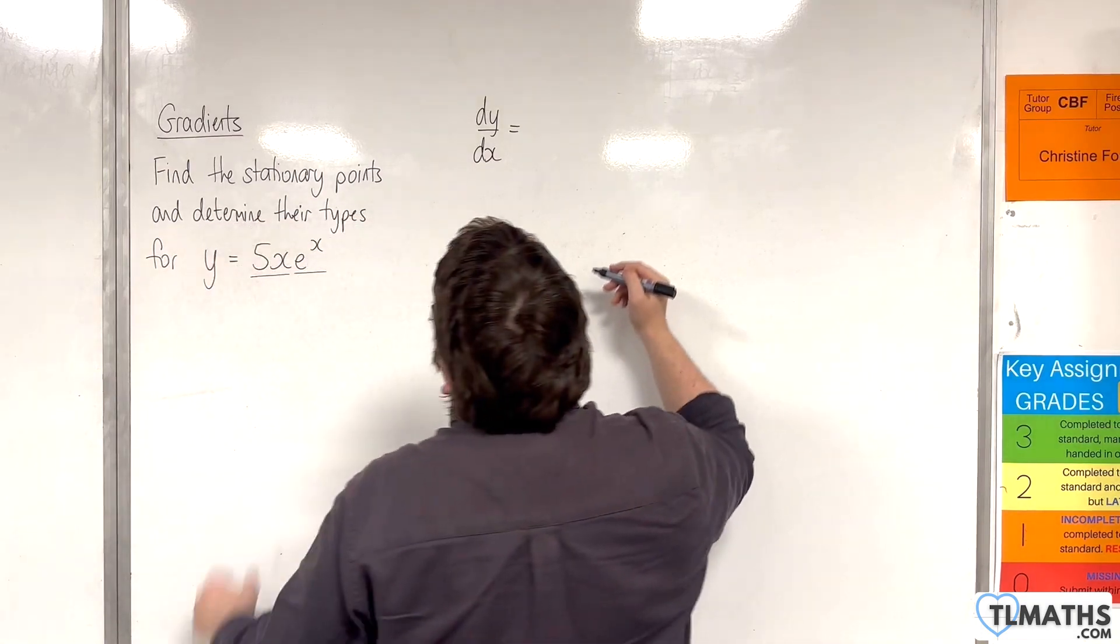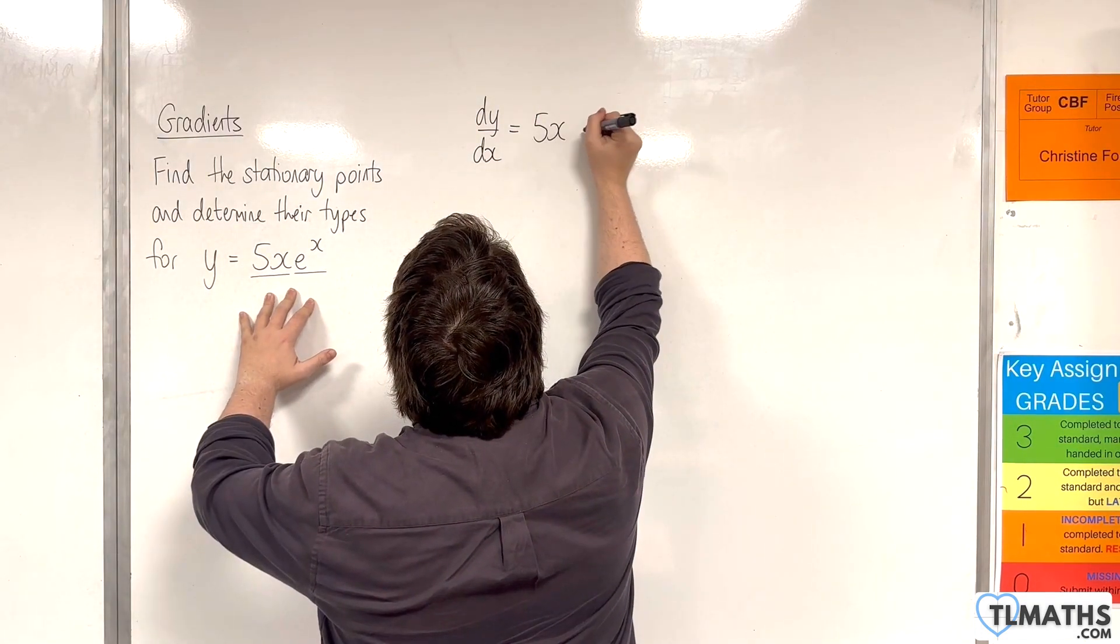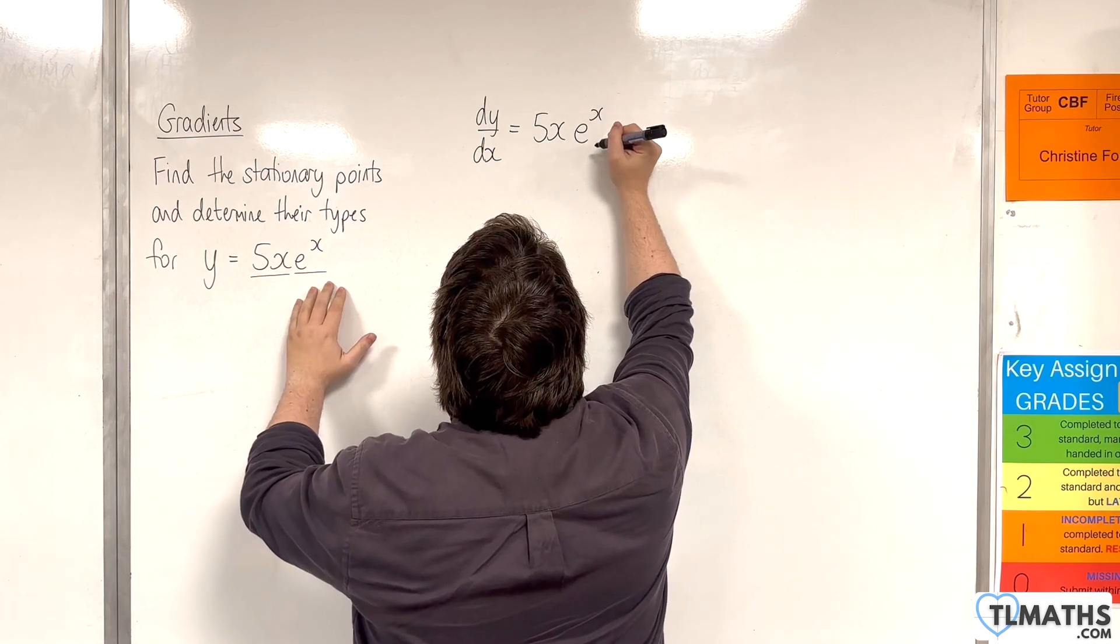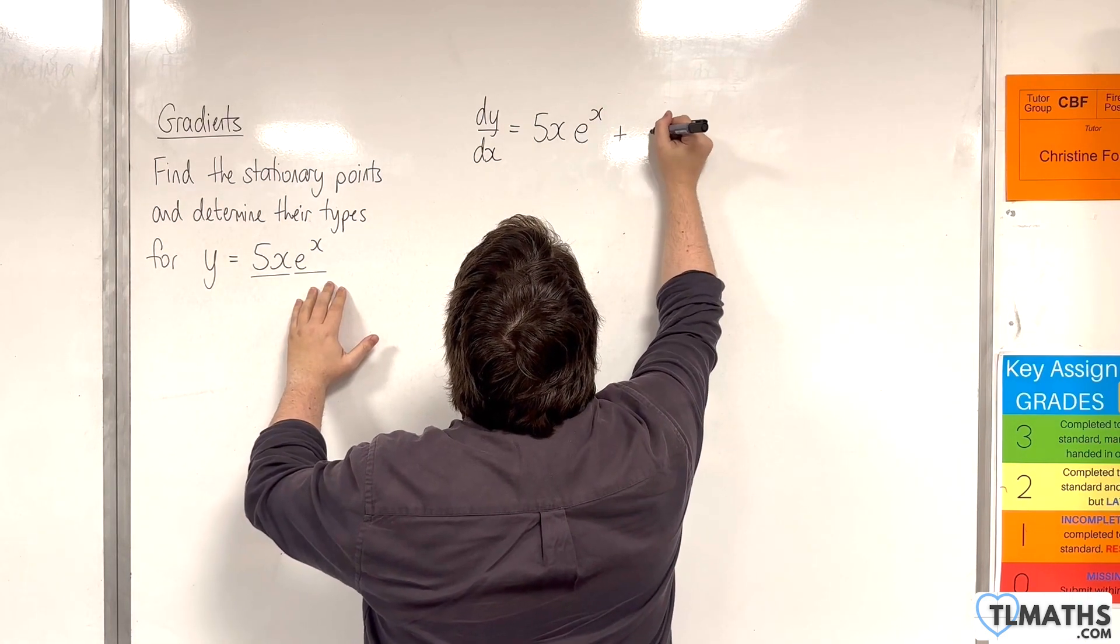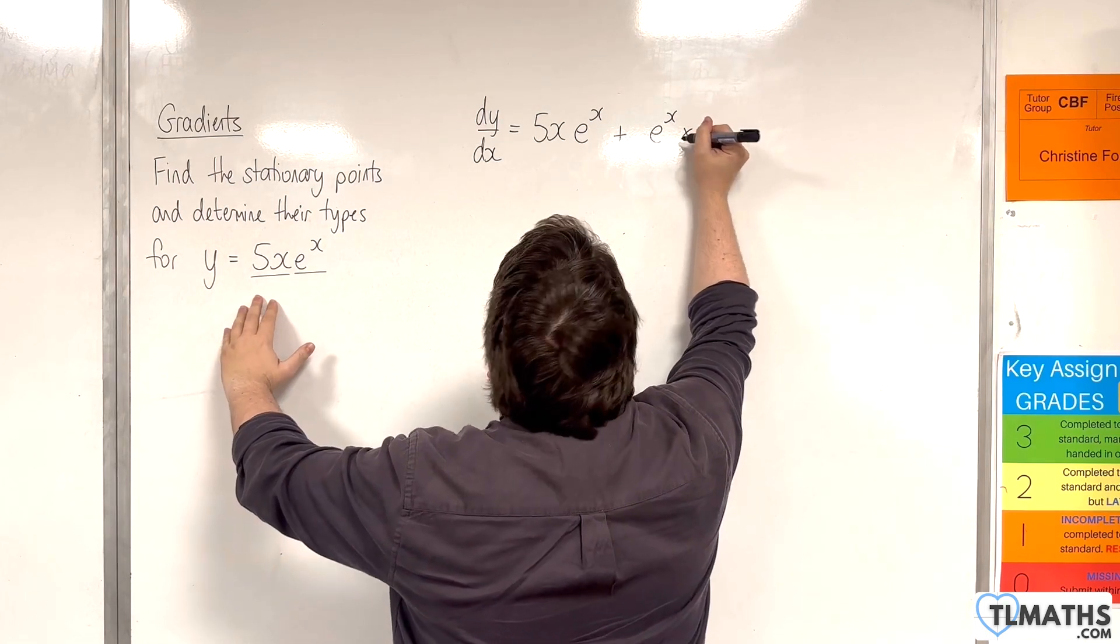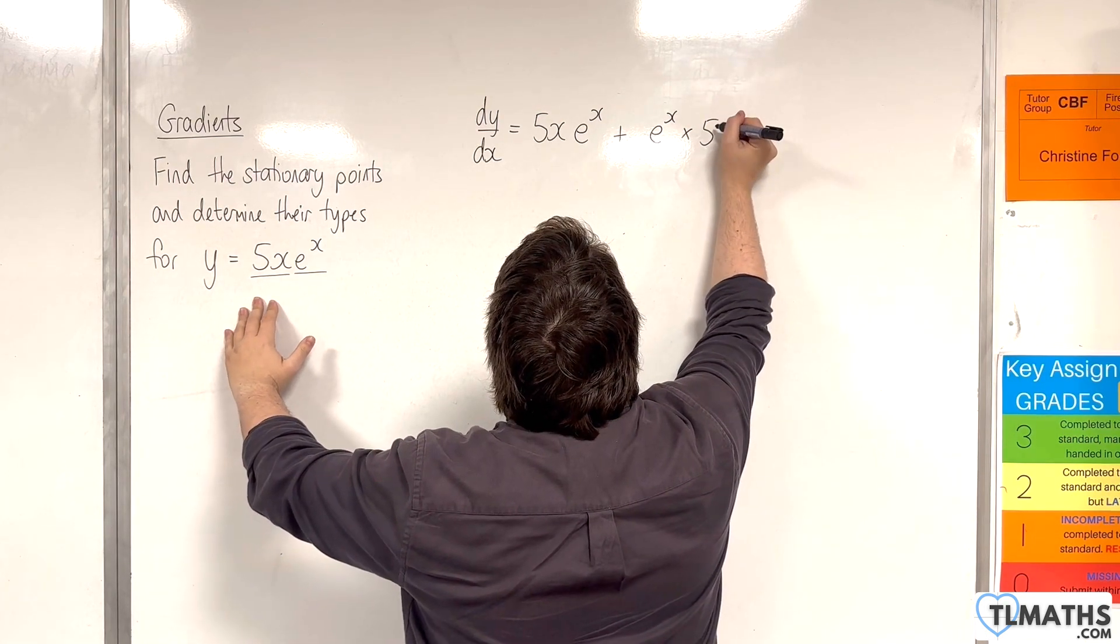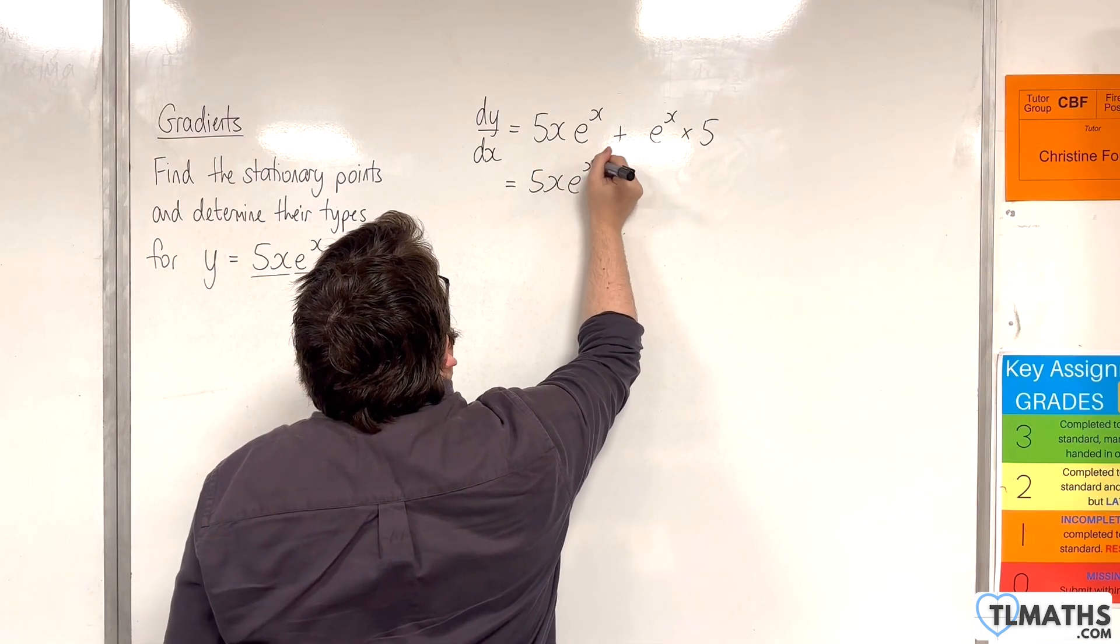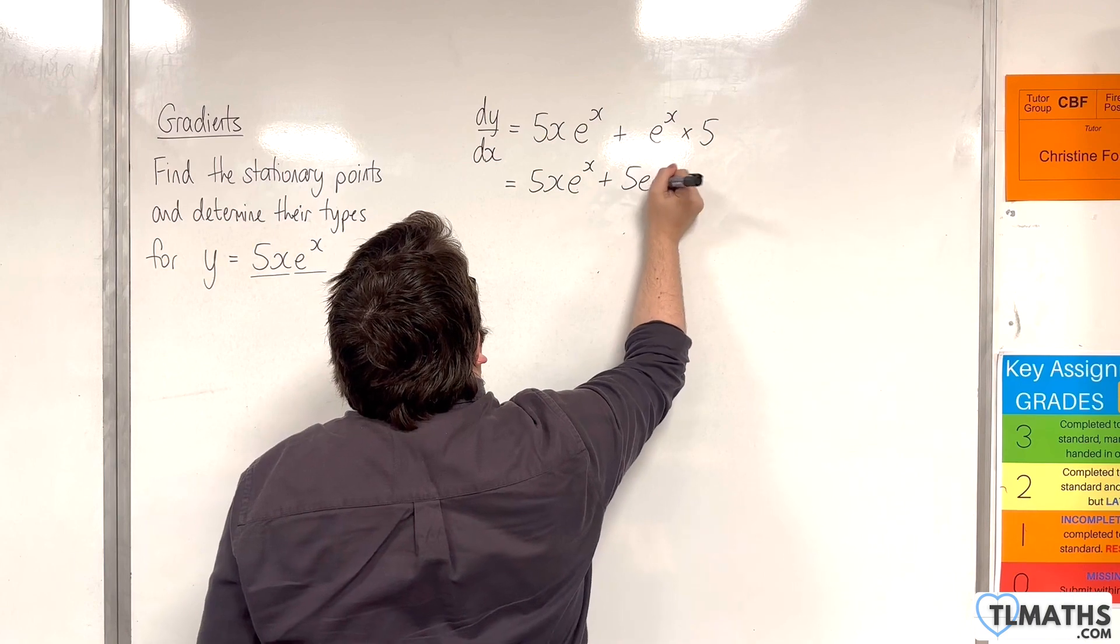The product rule would be the first times by the derivative of the second, so 5x times e to the x, plus the second times the derivative of the first. 5x differentiates to 5, so we can write that as 5x e to the x plus 5 e to the x.